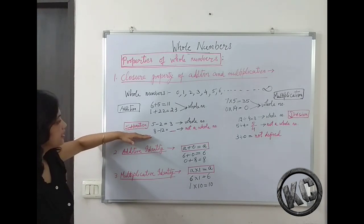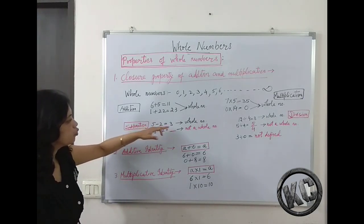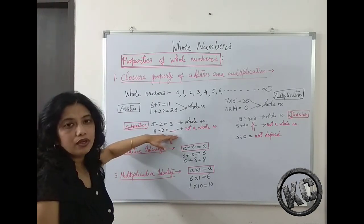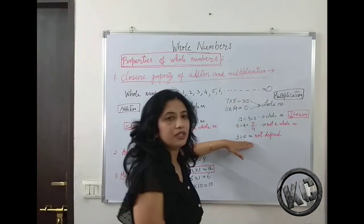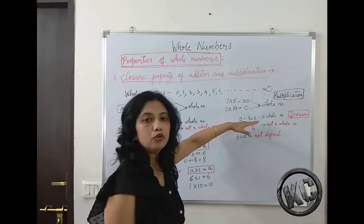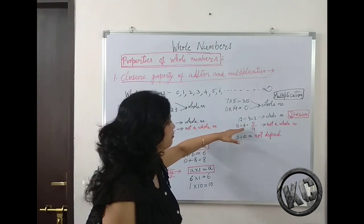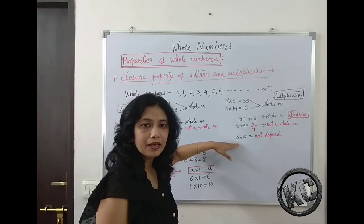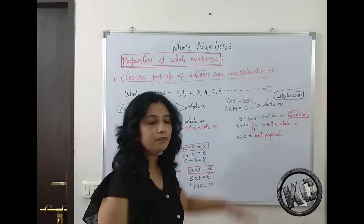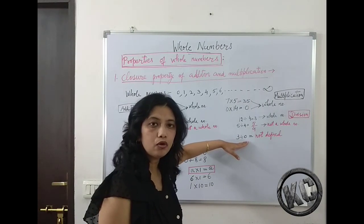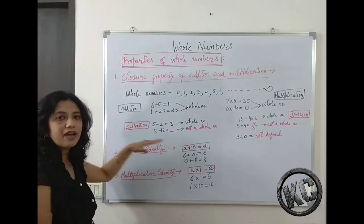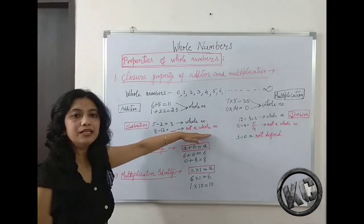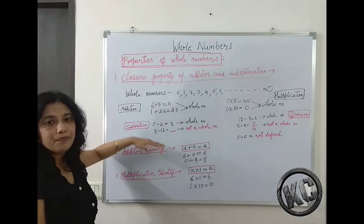Now let us see subtraction and division. When we subtract 5 minus 2 we get 3, which is a whole number. But when we subtract 8 minus 12, we do not get a whole number. Similarly in division — 12 divided by 4 gives 3, which is a whole number, but 5 divided by 4 gives 5/4, which is a fraction, not a whole number. Also, 3 divided by 0 is not defined, because any number divided by 0 is undefined. So in subtraction and division, the answers are not always whole numbers — they are not closed under whole numbers.